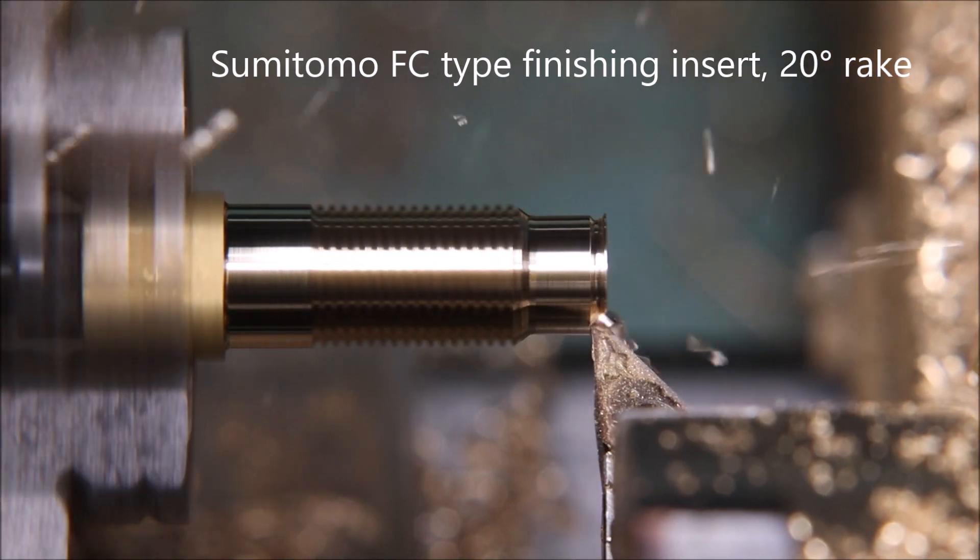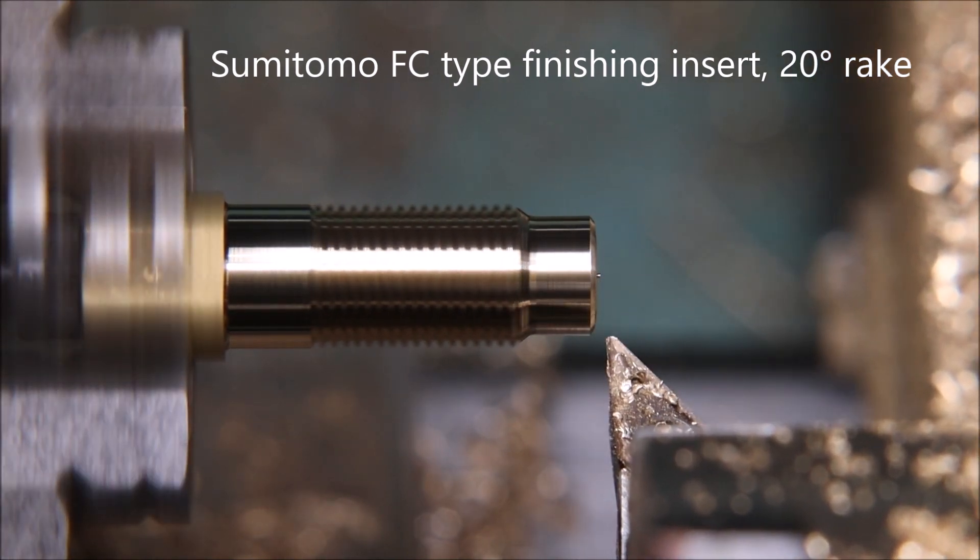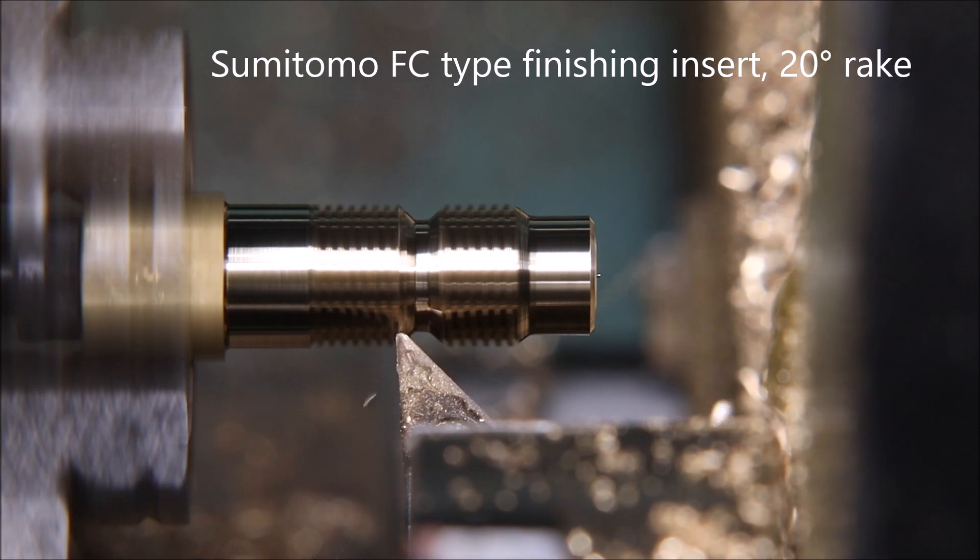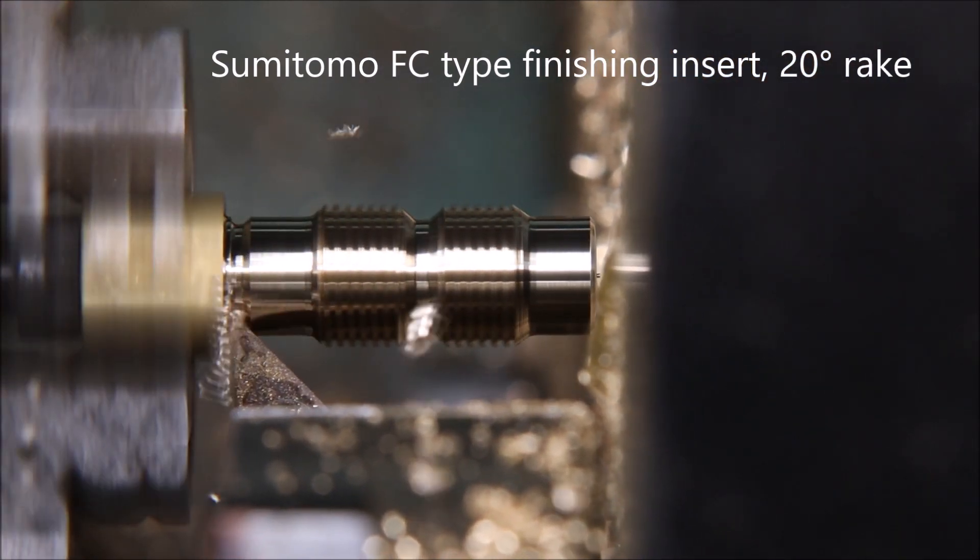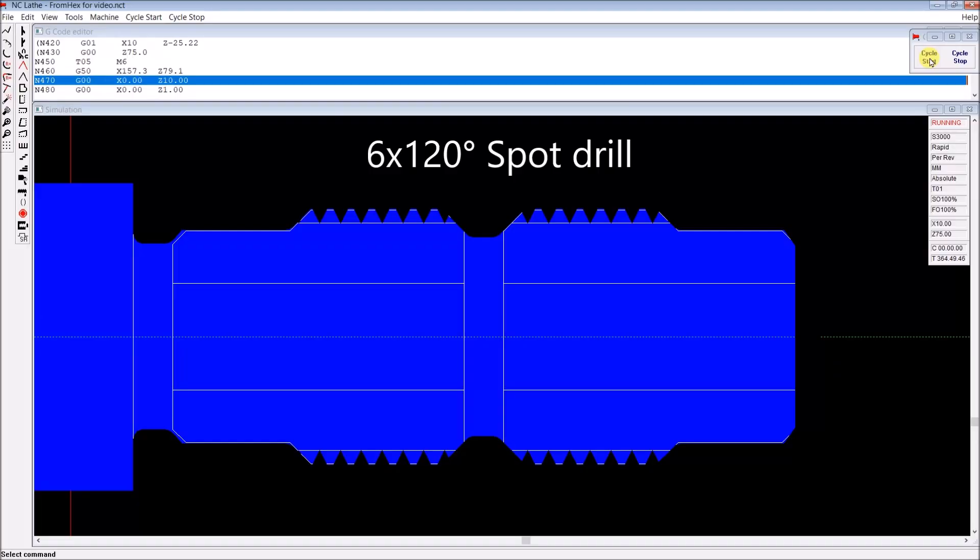The small nib that you can see created here at the centre is a function of the backlash in my turret. Until I get that fixed I really have difficulty getting tools to really be on centre all the time.